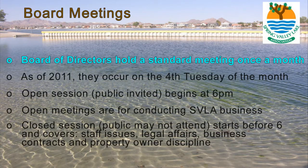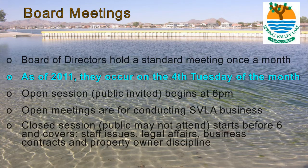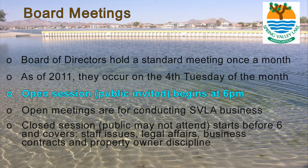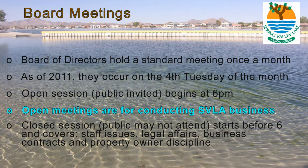The board of directors holds a standard meeting once a month. As of 2011, standard meetings occur on the fourth Tuesday of the month. Open session meetings, where property owners are invited to attend, begin at 6 p.m. Open meetings are for conducting regular SVLA business and for staff to update the board of directors and the property owners on current events within the association.